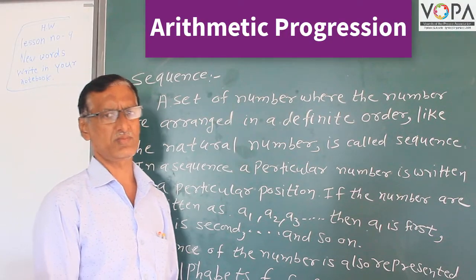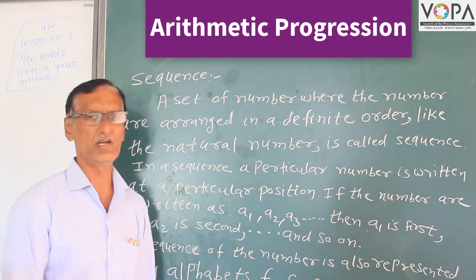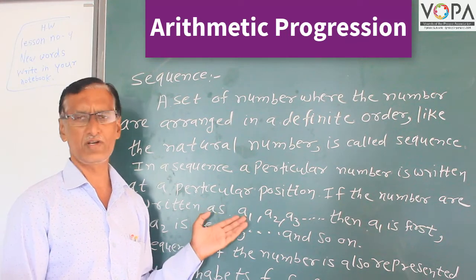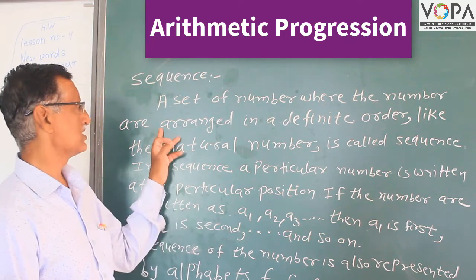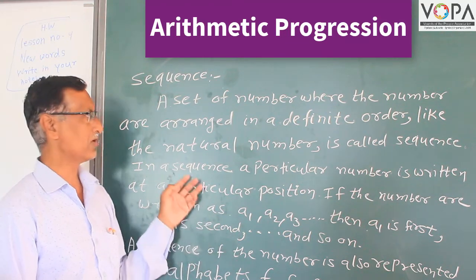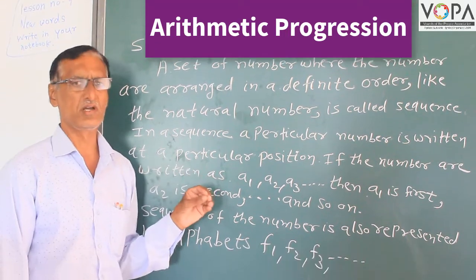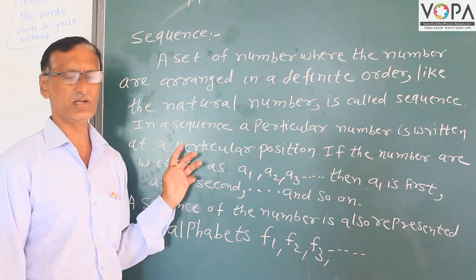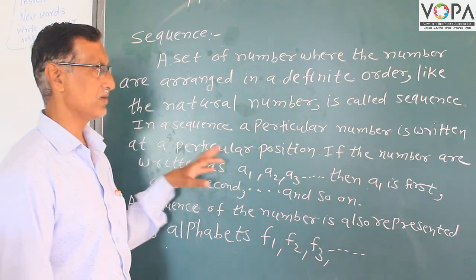Chapter 3: Arithmetic Progression. Here in chapter 1, the first sequence is introduced. Numbers are arranged in a definite order — for example, 1, 2, 3, 4, 5, 6, 7 arranged in a series where the difference between consecutive terms is 1. This arrangement 1, 2, 3, 4, 5, 6, 7, 8, 9, 10, 11, 12 with difference 1 is called a sequence of natural numbers. A particular number is written at a particular position, for example 3, 6, 9 where the difference between two numbers is 3.